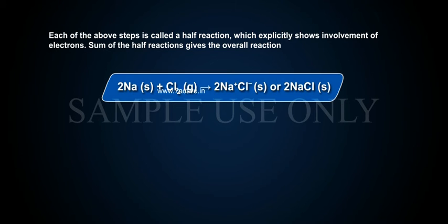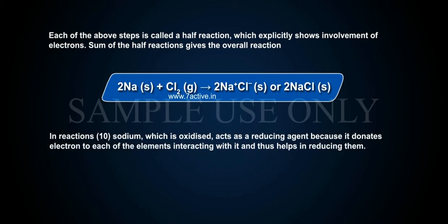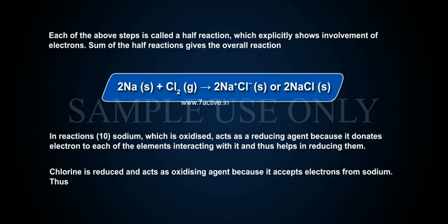2Na(s) + Cl₂(g) → 2Na⁺Cl⁻(s) or 2NaCl(s). In this reaction, sodium, which is oxidized, acts as a reducing agent because it donates electrons to each of the elements interacting with it, and thus helps in reducing them. Chlorine is reduced and acts as an oxidizing agent because it accepts electrons from sodium.